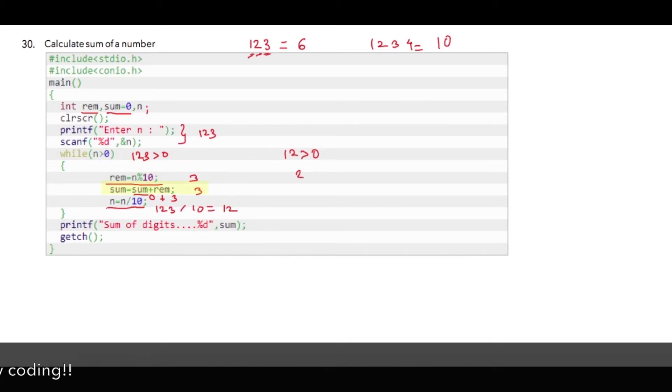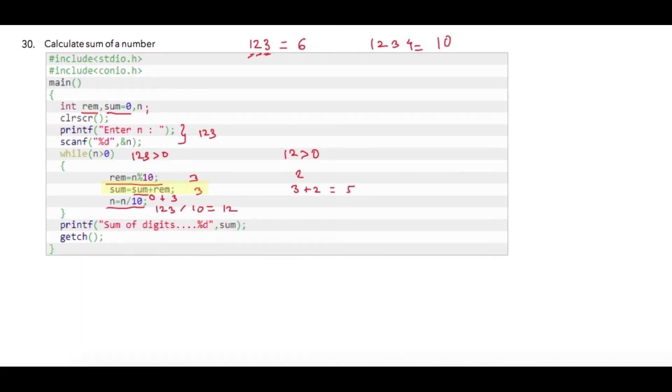Now here what is happening, the current value of sum is 3 plus 2, so we'll have new value of sum as 5. And then again we'll divide 12 by 10, so we'll have new n that is 1.